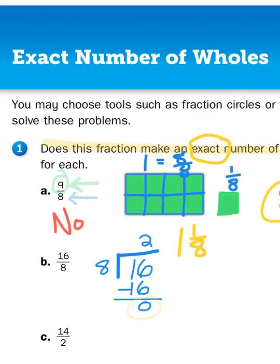So, for number 1b, yes, I have an exact amount of whole numbers that I can take or divide 16/8ths into. So, if I were to take 16/8ths and divide it into wholes, I would have two rectangles cut into 8 parts apiece, 16/8ths.